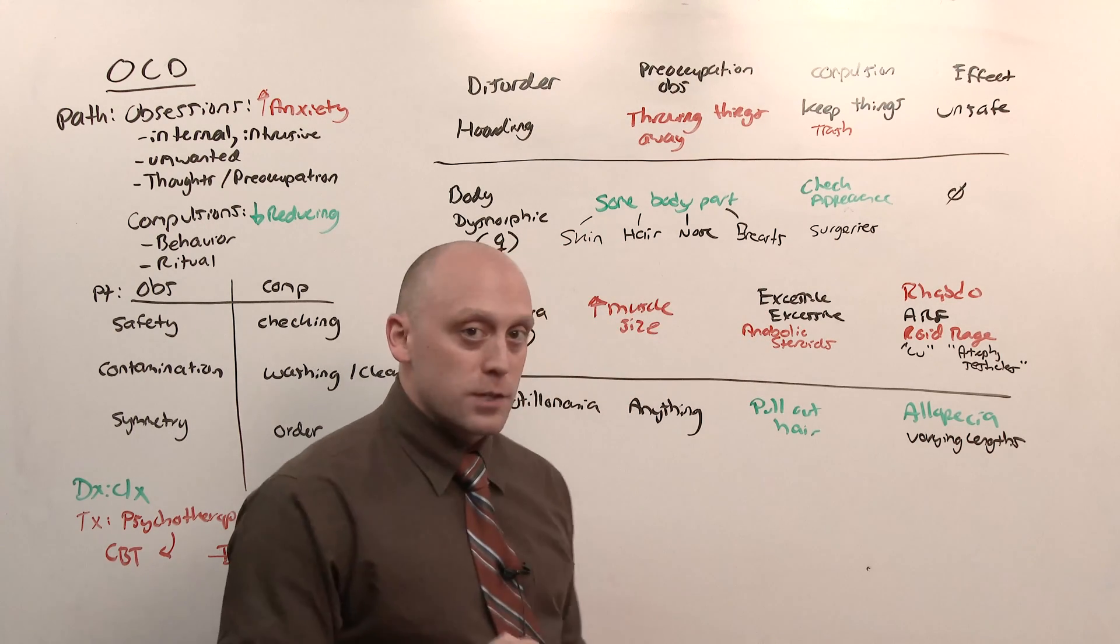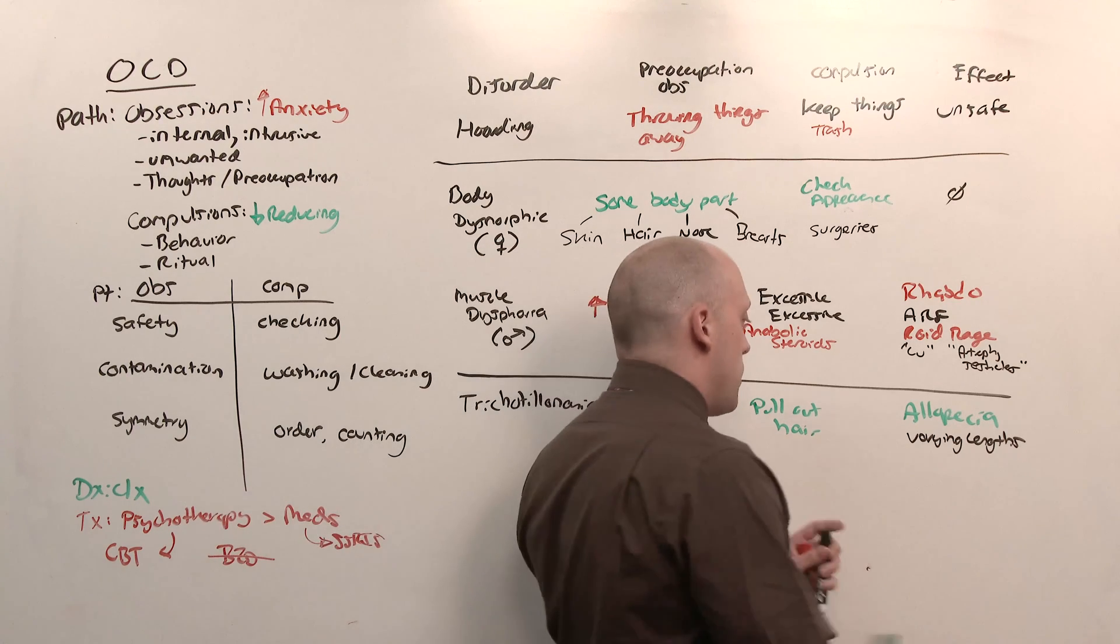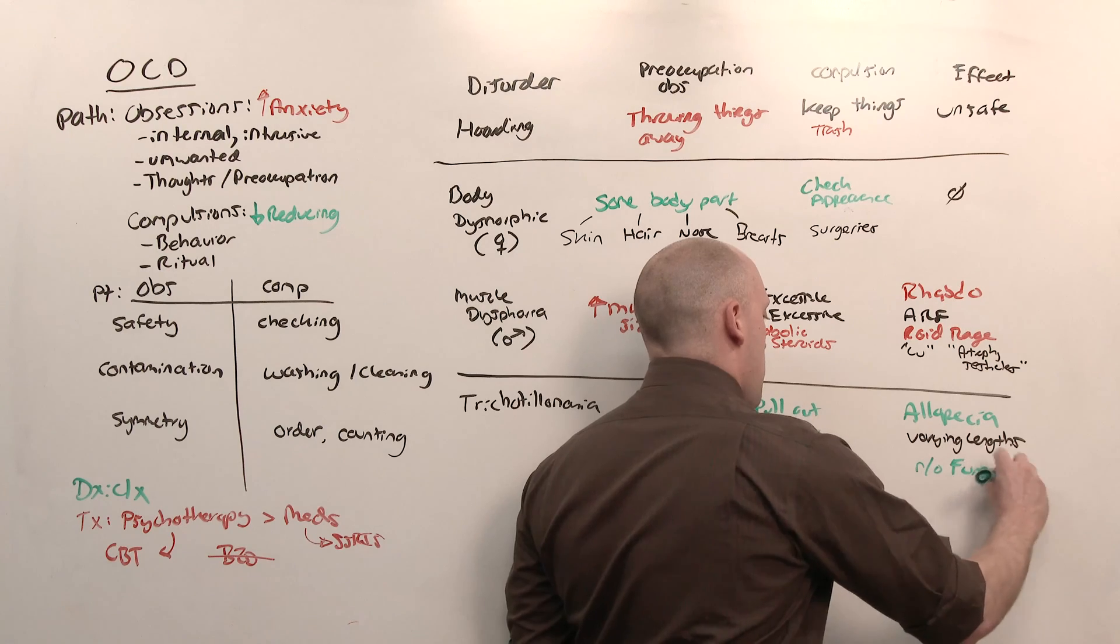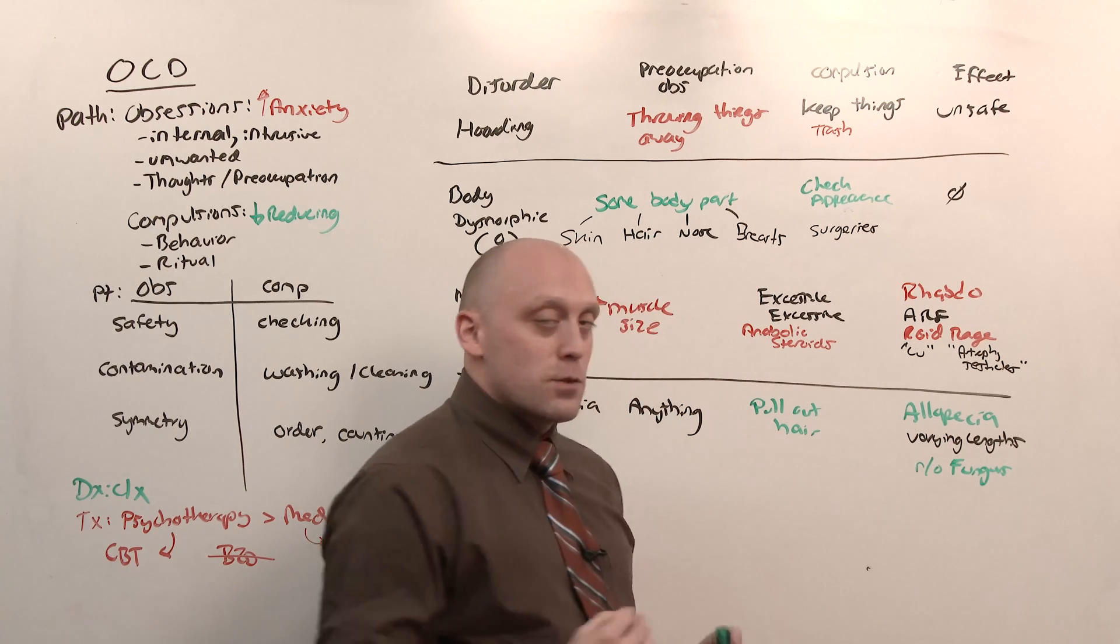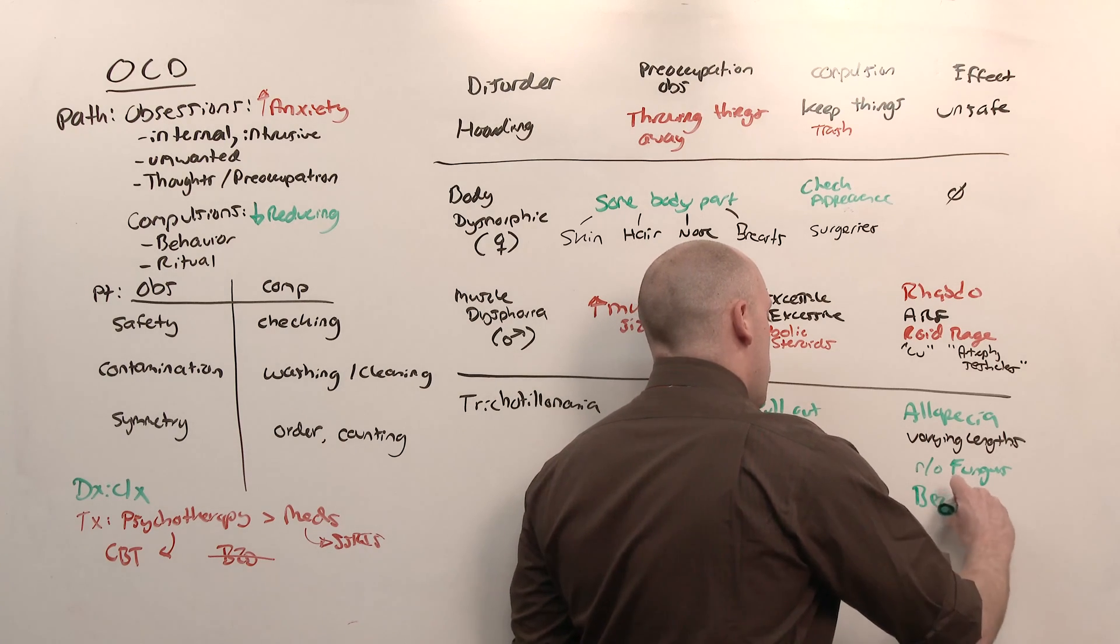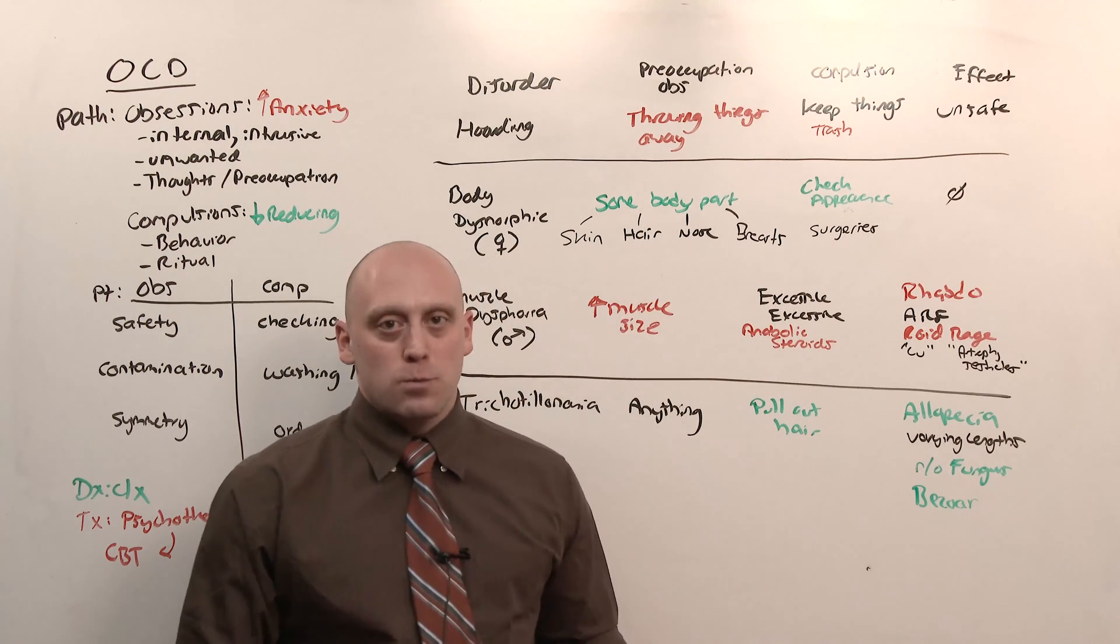What you need to do for this, because it's alopecia, is rule out fungus. If you fail to rule out fungus, she loses her hair. That's no good. And the big association with the boards is the bezoar. And a variant where she pulls out her hair and eats it can lead to a small bowel obstruction.